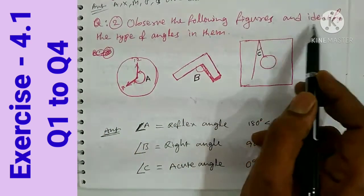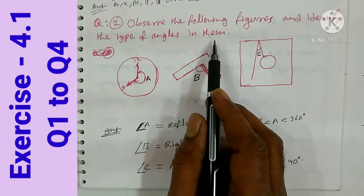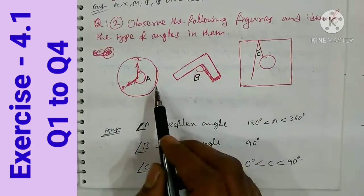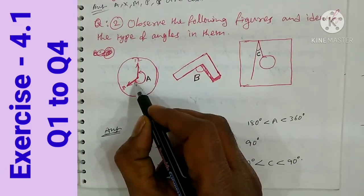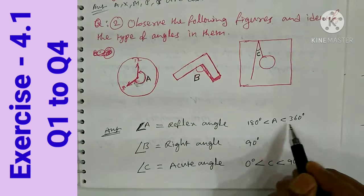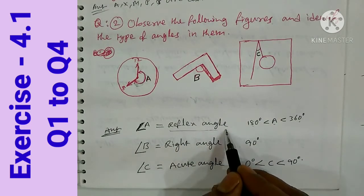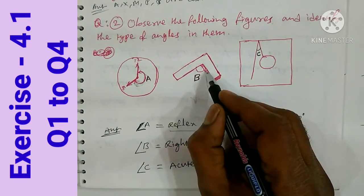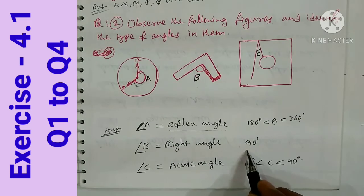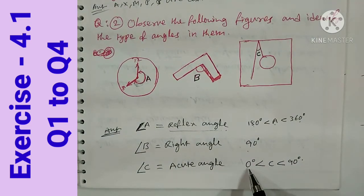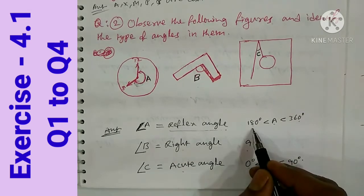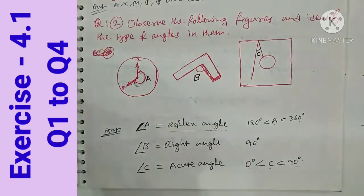Question number 2: observe the following figures and identify the type of angles. Here three shapes are given. This first angle is more than 180 degrees and less than 360 degrees, so it is called a reflex angle. Angle A is a reflex angle. The second is 90 degrees, so B is a right angle. The third is less than 90 degrees, so it is an acute angle — between 0 and 90 degrees.